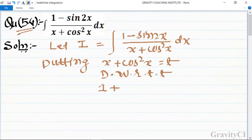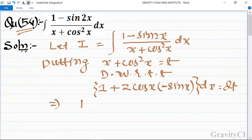We get dx/dt = 1 and d(cos²x)/dt = 2cosx × (-sinx) × dx. This implies (1 - 2sinxcosx)dx = dt.